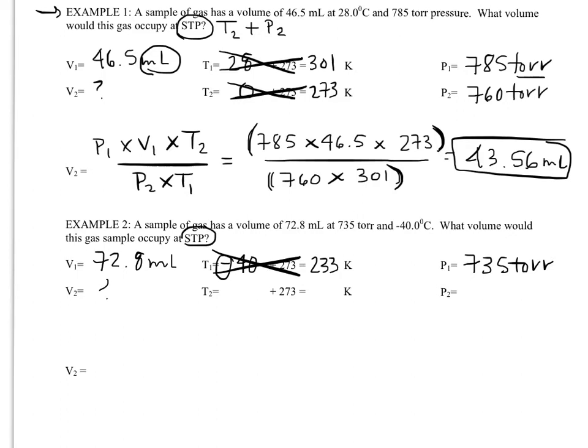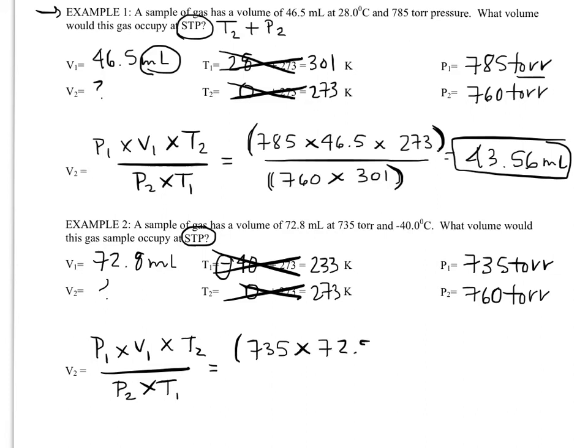Okay. They want to know the new volume at STP, which means a temperature of 0 degrees Celsius or 273 Kelvin, and a pressure of 760 torr. So we're going to use the same equation as we did above, being very careful to get the right subscripts in the right places. And P1 is 735, V1 is 72.8, T2, oops, that wasn't supposed to be a parentheses yet. T2 is 273, in parentheses.